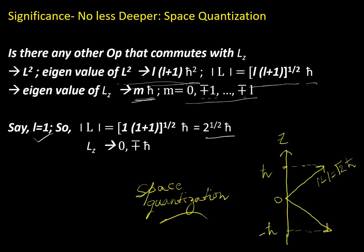The graphical presentation shows that if the vector has a particular length, it can only have certain discrete directions in space — not arbitrary directions. Only 3 values of θ (the angle with z-axis) are allowed for L=1, because L_z has definite values 0, ℏ, and −ℏ. We call this space quantization.